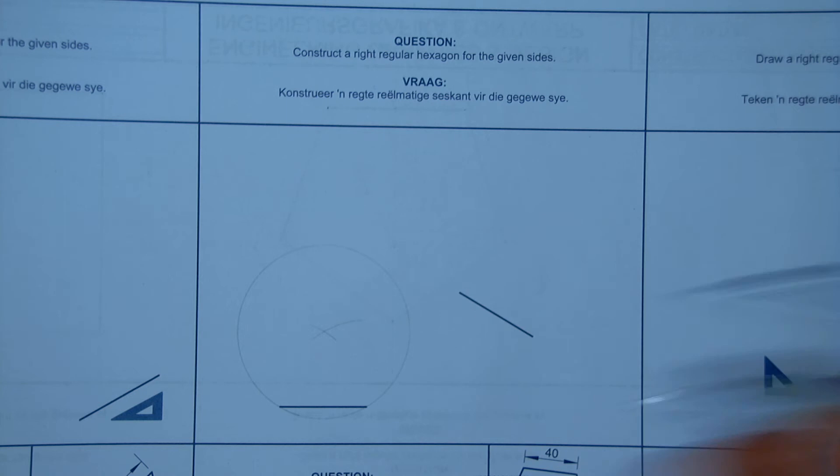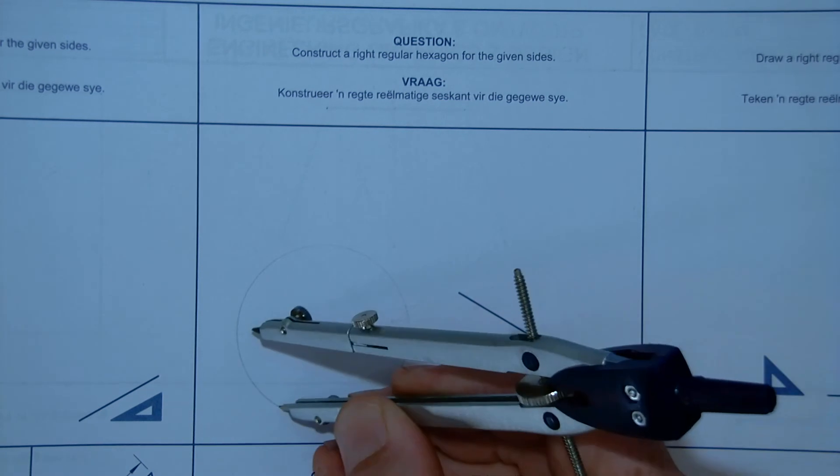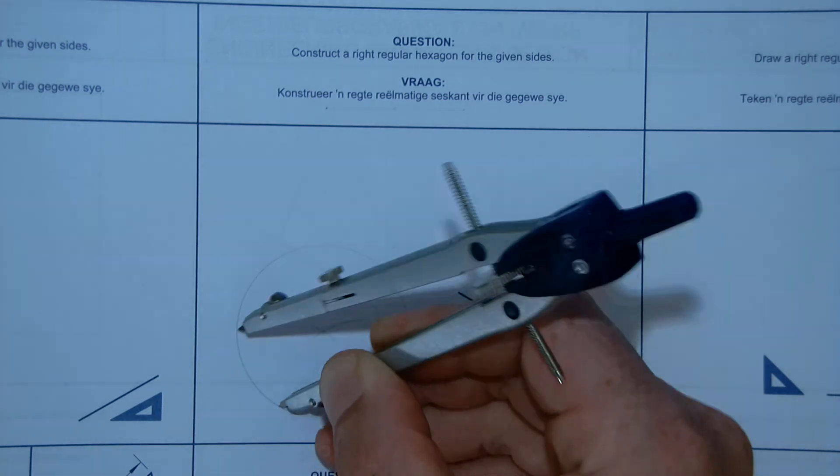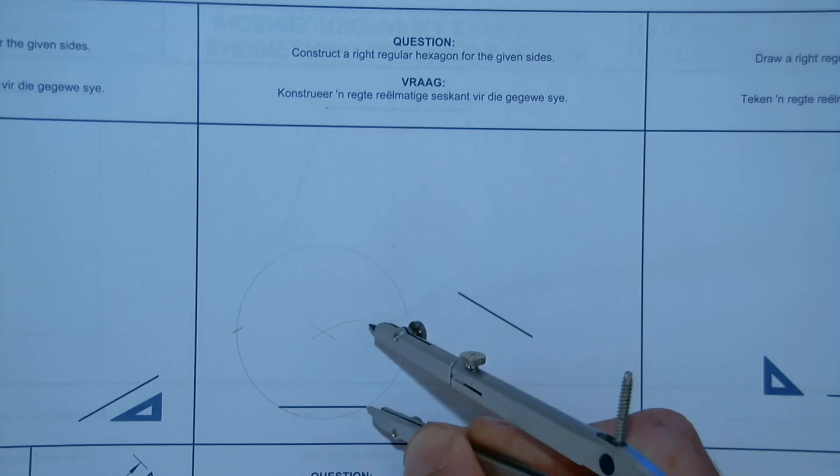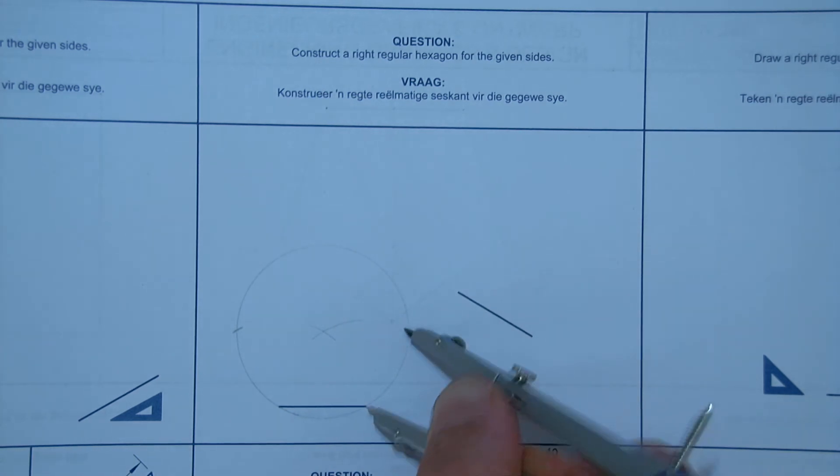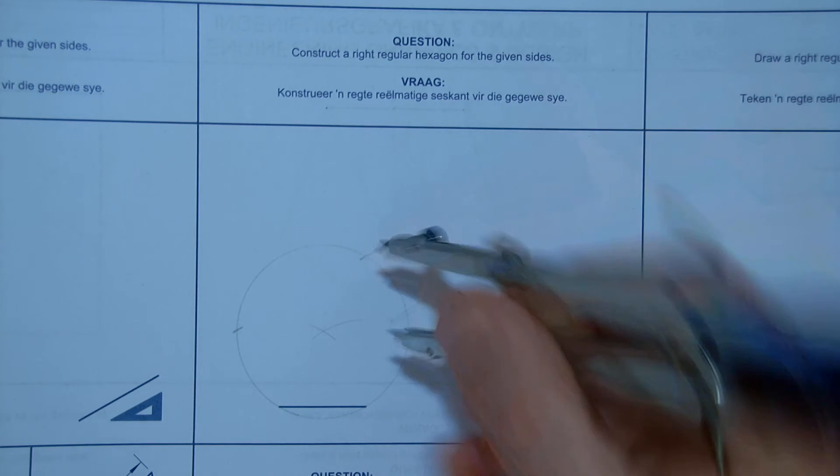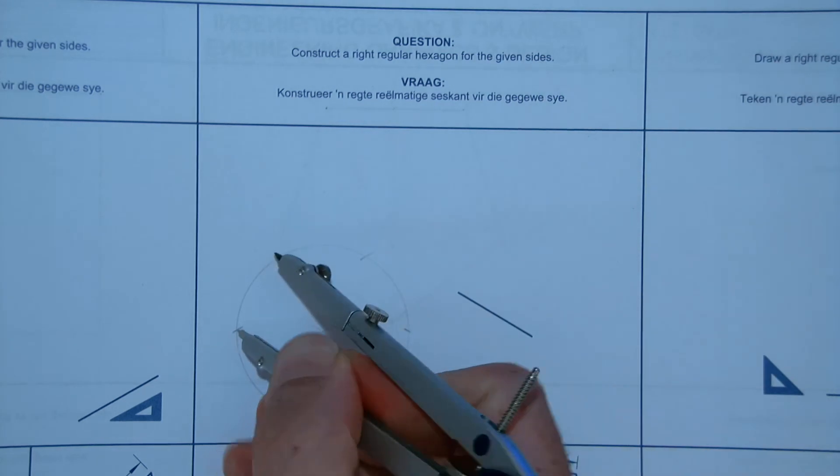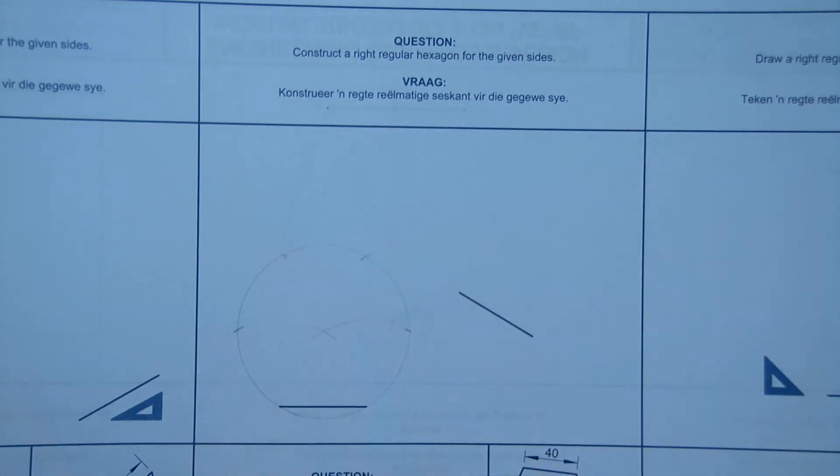Now, our hexagon's got six sides. So, all we do is place it there, mark it off once, mark it off twice, three, and four. There are all my six sides.